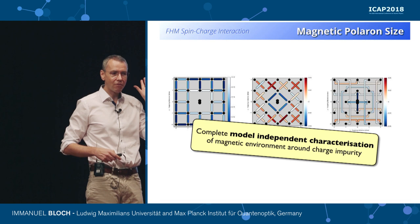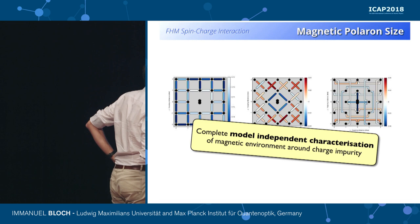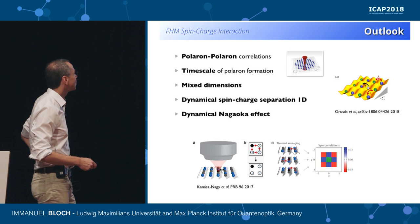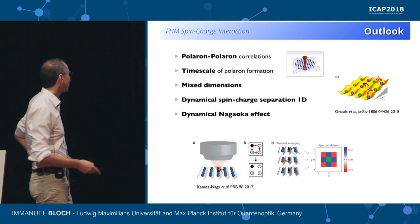We now have a complete, model-independent polaron image of a magnetic polaron forming around these charged defects, which gives us a completely new handle on looking at the interplay of charge and spin in the system.